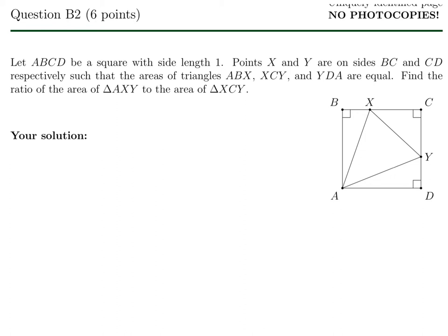Let a, b, c, d be the square with side length 1. Points x and y are on the sides b, c, and c, d respectively, such that the areas of the triangles a, b, x, x, c, y, and y, d, a are equal. Find the ratio of the area of triangle a, x, y to the area of triangle x, c, y.